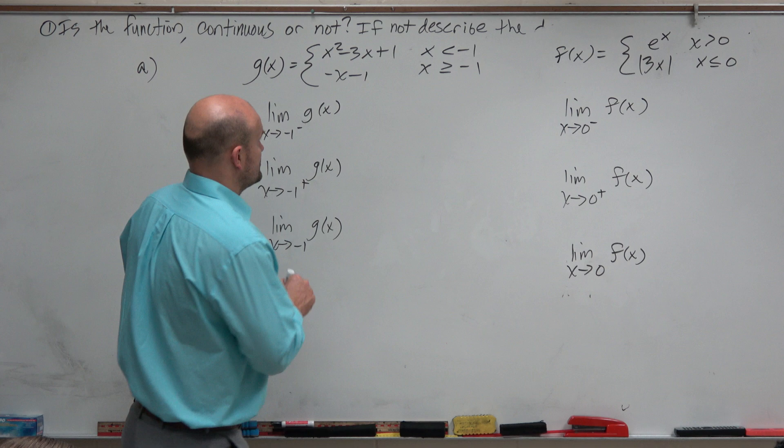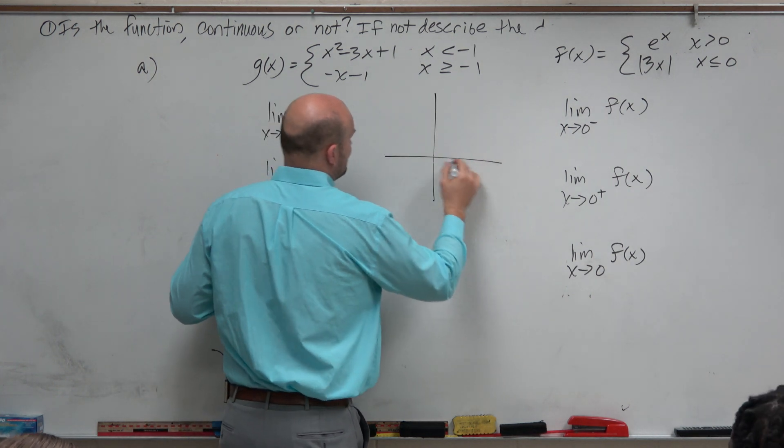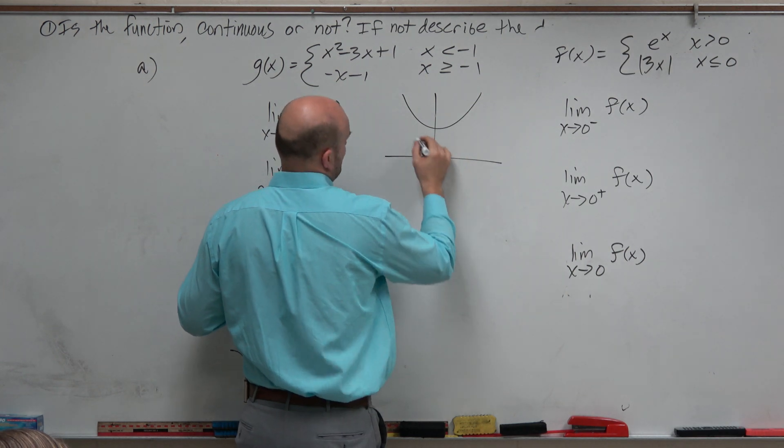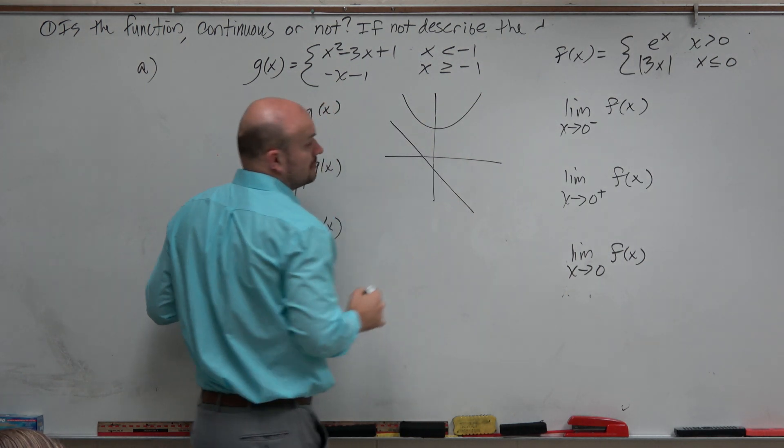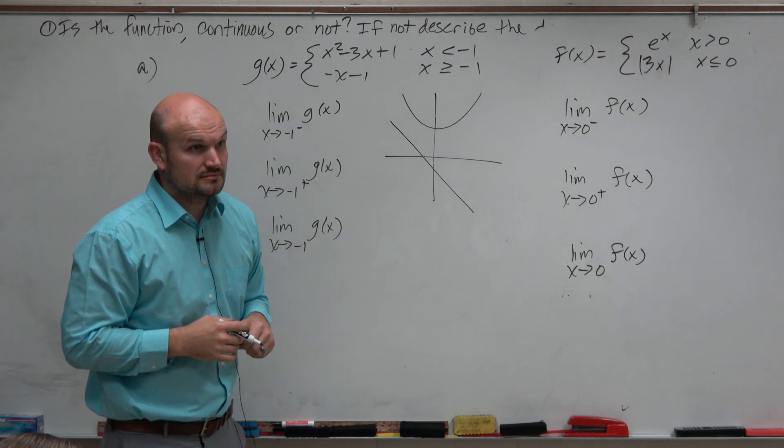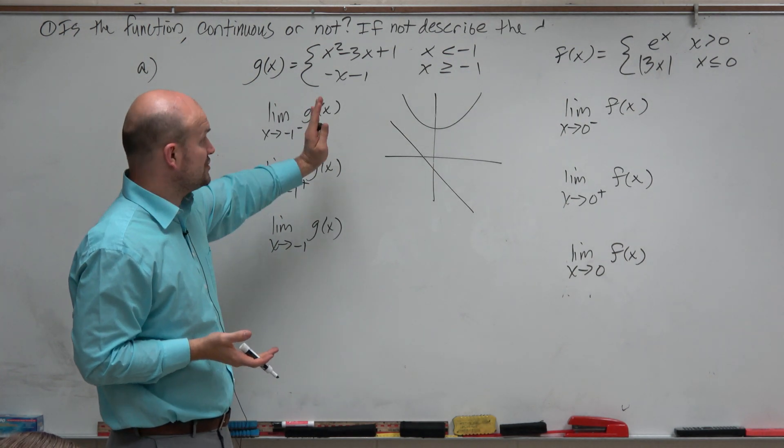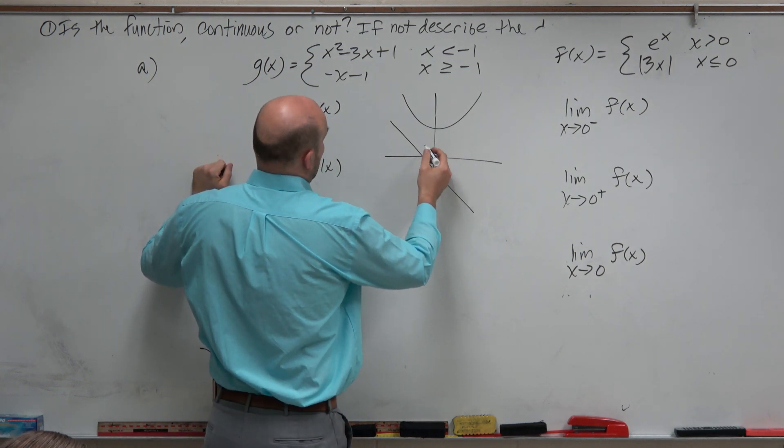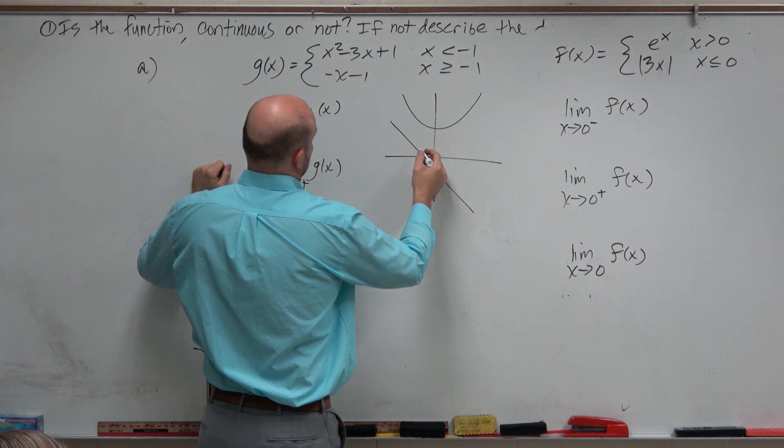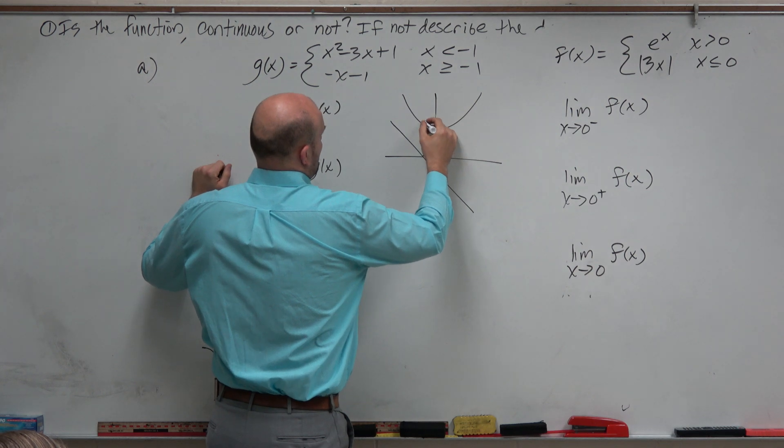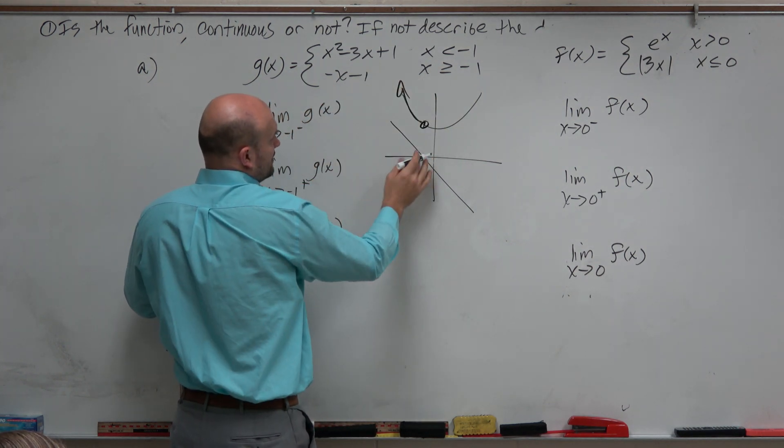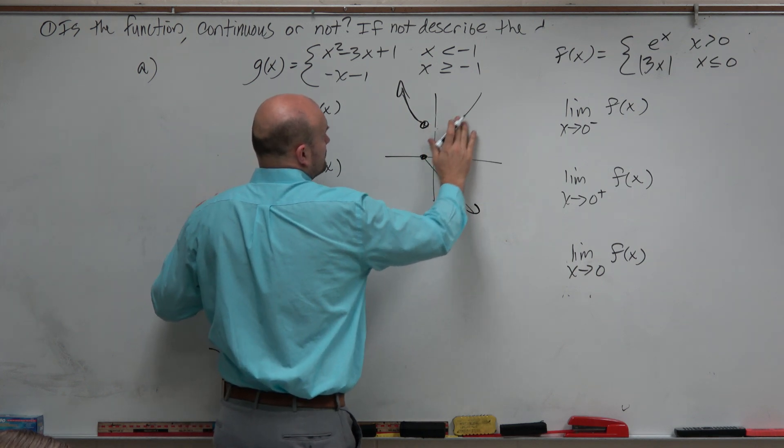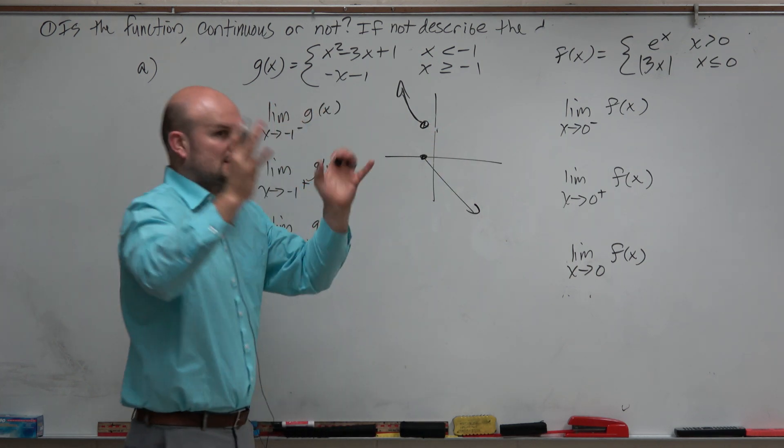I saw many students plugged this into the graphing calculator and got something that looked like this. All we really need to do is remember our restrictions. x less than negative 1 is for the quadratic. Let's say negative 1 is right here. And x greater than or equal to negative 1 would have been down there. So ideally, your graph should have looked something like this.